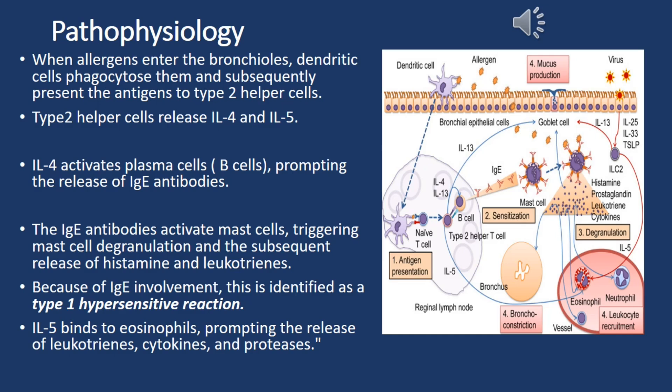Type 2 helper cells release interleukin-4 and interleukin-5. Interleukin-4 activates plasma cells and B cells, prompting the release of IgE antibodies. The IgE antibodies activate mast cells, triggering mast cell degranulation and the subsequent release of histamine and leukotrienes.